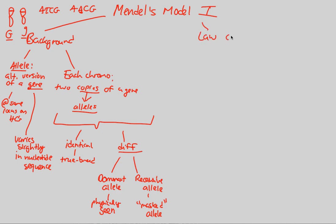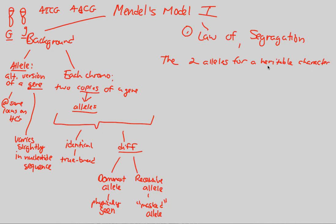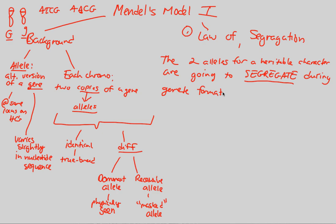The last thing to talk about in this video is the Law of Segregation. Out of everything Mendel did, he created two very important laws, and the first is the Law of Segregation. The definition is: the two alleles for a hereditable character are going to SEGREGATE during gamete formation and end up in different gametes.